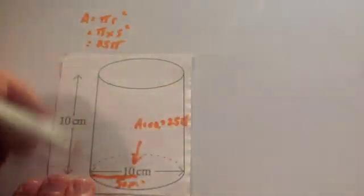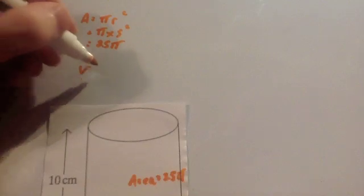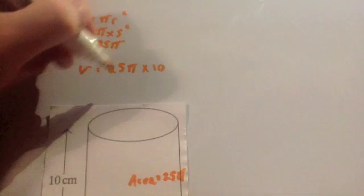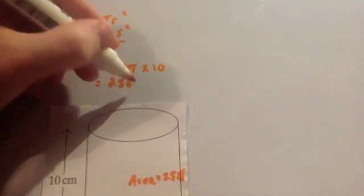So the area of the bottom or the top is going to be area equals 25 pi. Because the height of the whole thing is 10, you're going to times your 25 pi, the volume, equals 25 pi times 10, which is going to be equal to 250 pi.